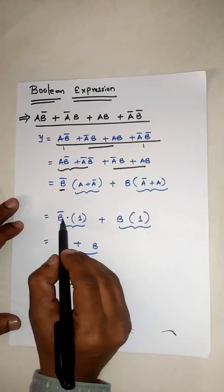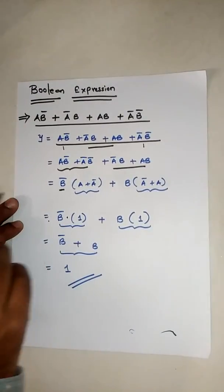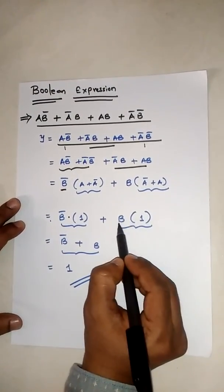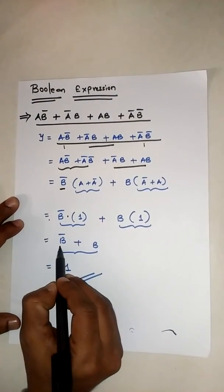On this side also, 1 into B, so we have to write B only. So it will be B̄ plus B, which equals 1.